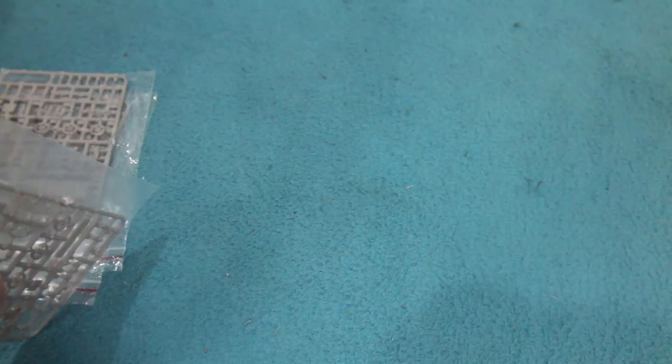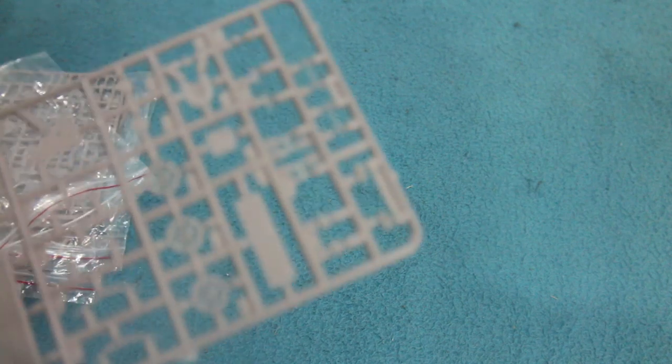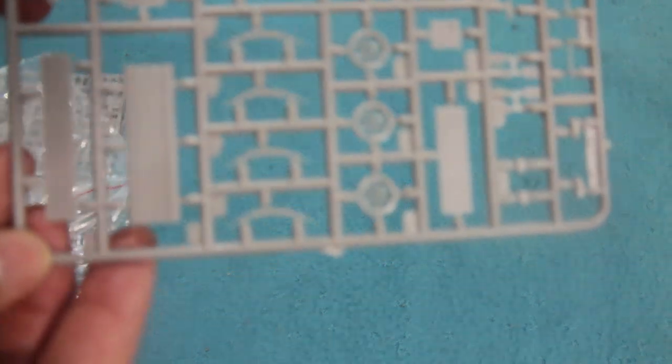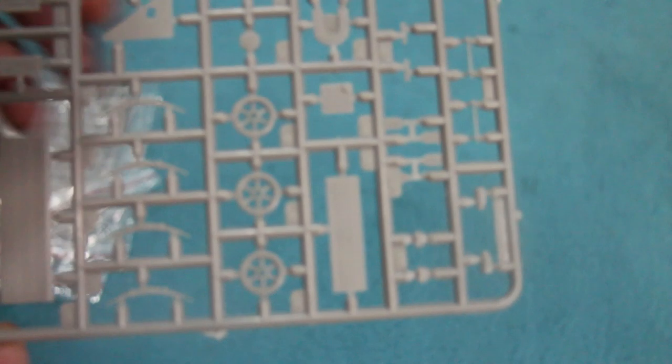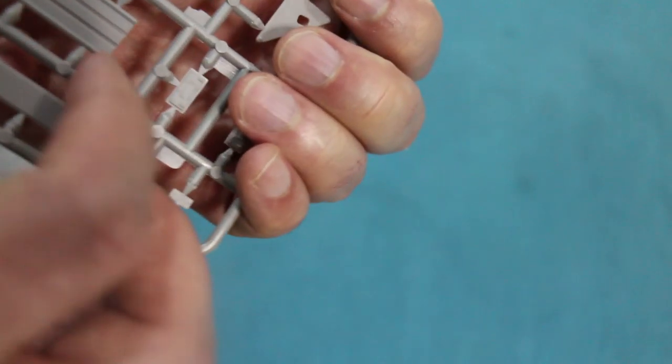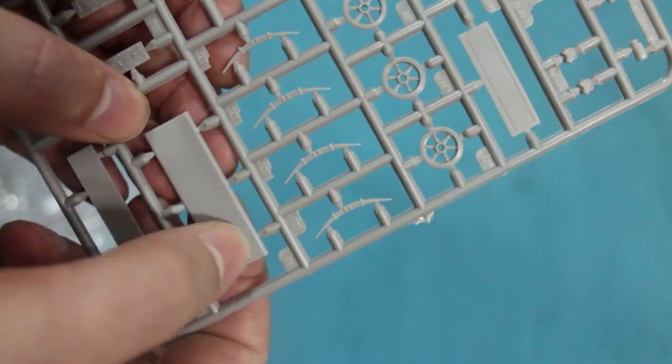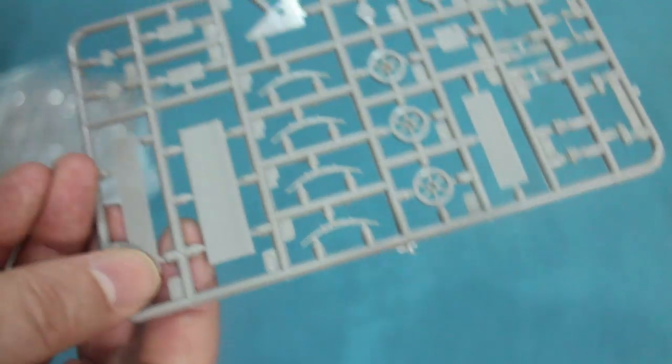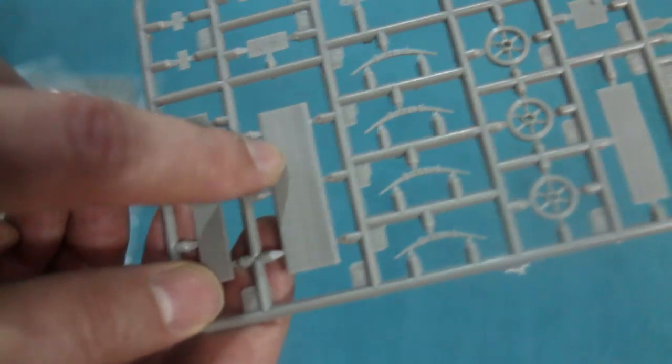So what's in the box? Well, we have four sprues here. These are identical sprues and these have the wheels in them. These are the road wheels.